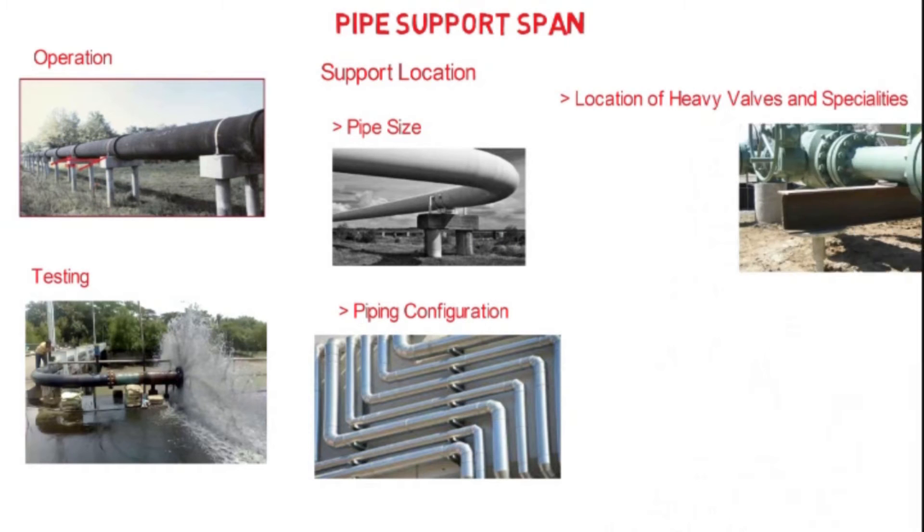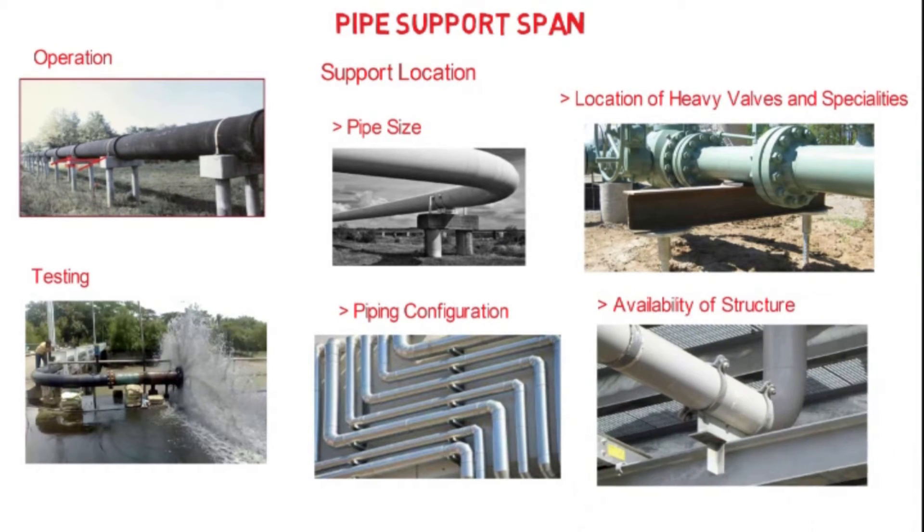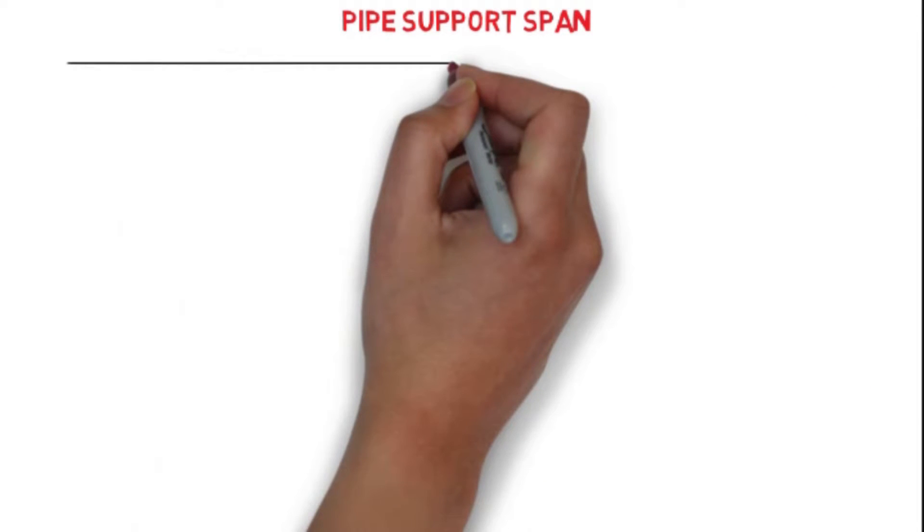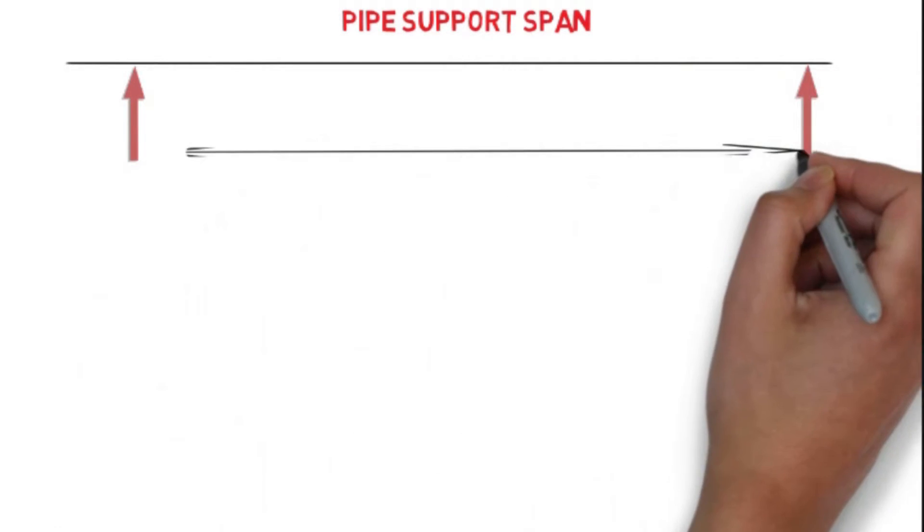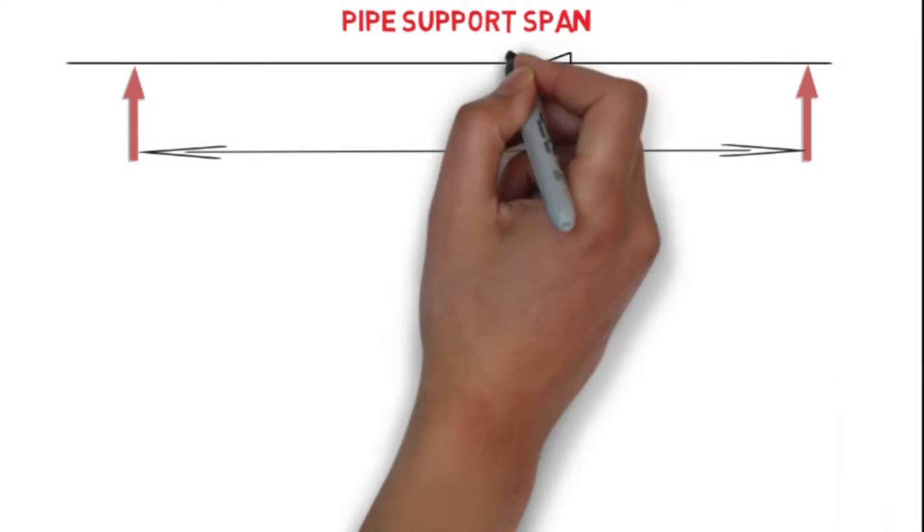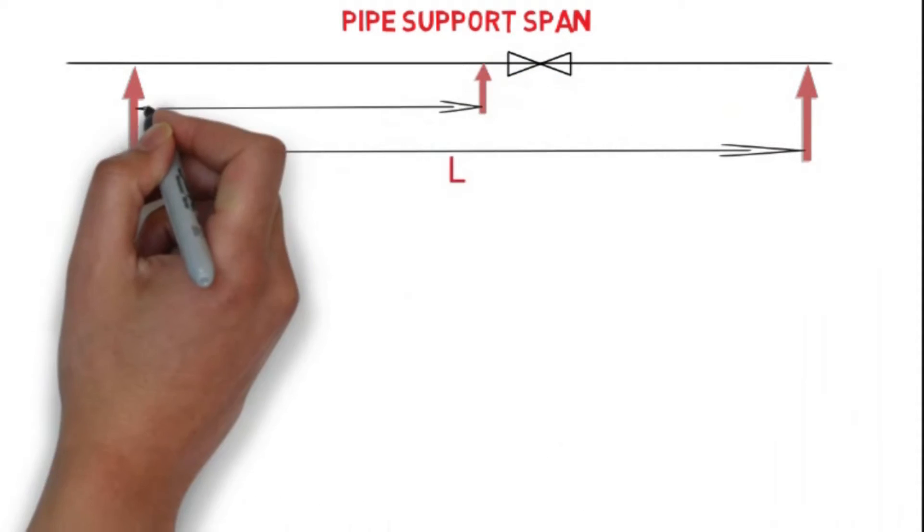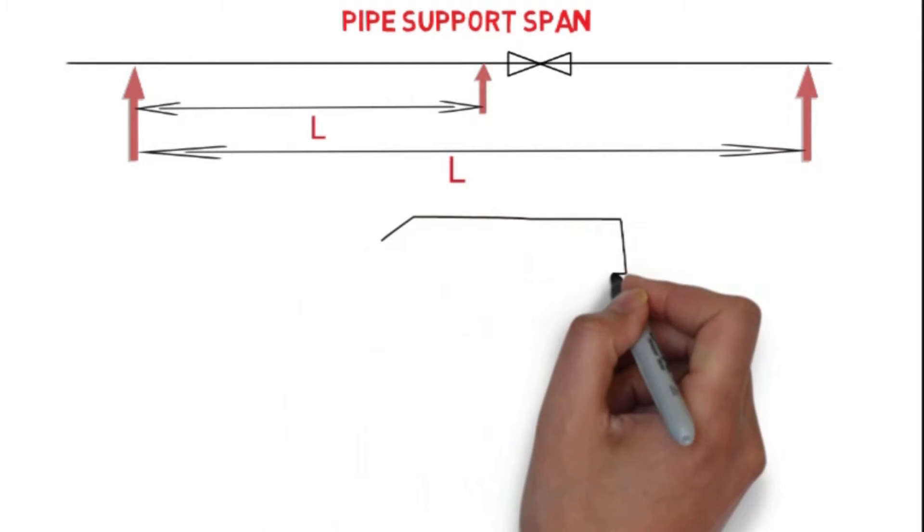Sometimes a line is capable of having the longest span, but load coming on the support may be very large, especially in large diameter pipelines. Then to distribute the load uniformly, more number of supports should be provided with the smallest span. There are two possible ways to model the pipe depending upon the end condition.